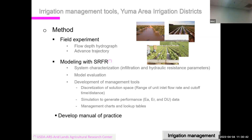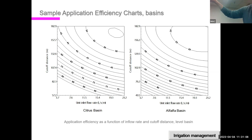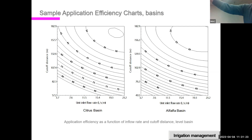Manuals of practice were also written to help growers make effective use of the management tools. A sample management chart shows application efficiency as a function of unit inflow rates and cutoff distance for citrus and alfalfa basins in the Yuma Mesa. The charts give an overview of the full range of management options — showing which combinations of flow rate and cutoff distance yield maximum or minimum application efficiency and everything in between.